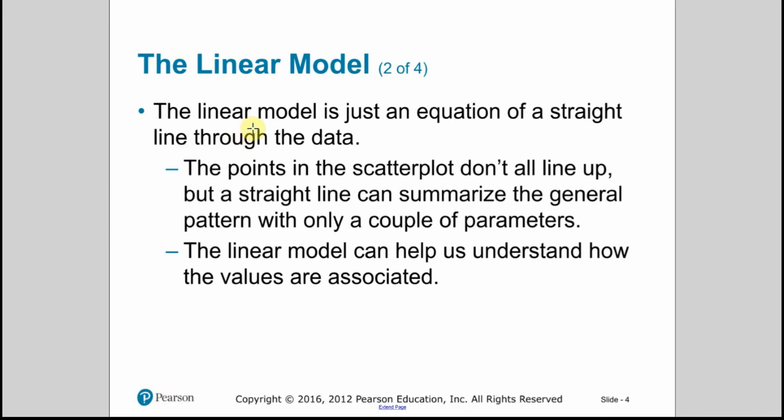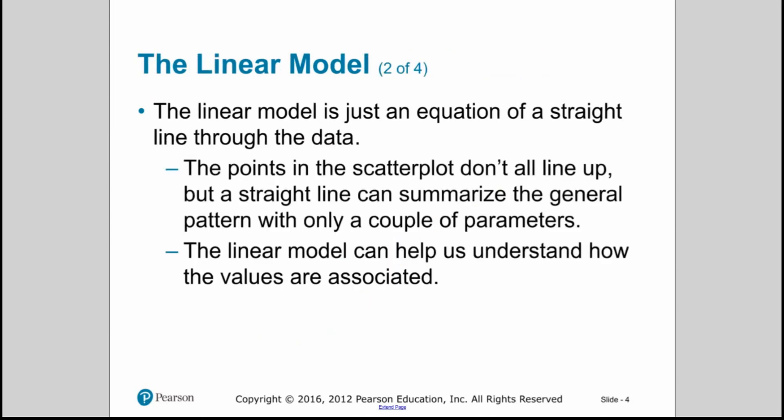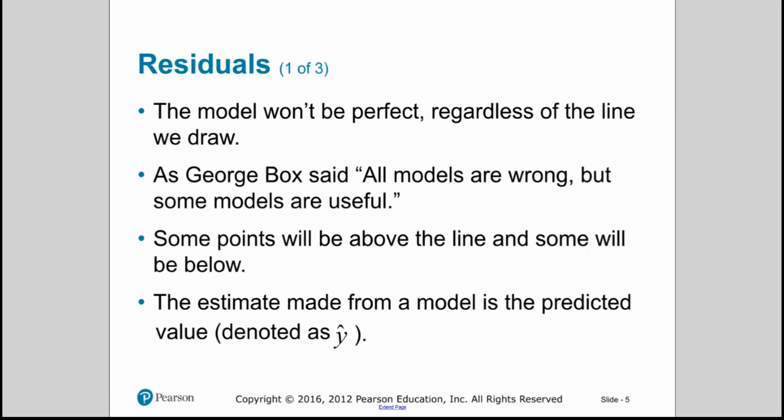Remember, the linear model, our line of best fit, is going to be used for estimates. It's never going to be exact unless your data is perfectly lined up, which doesn't generally happen in the real world. Our actual data doesn't actually fall on the line. It's a model for predicting things, and we understand that our predictions are going to be close, but not exact. So right here, model won't be perfect. Some points will be above the line, some will be below it.